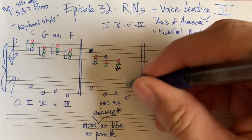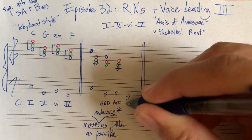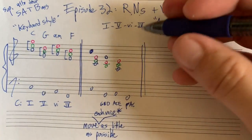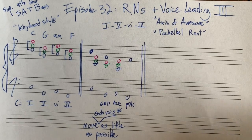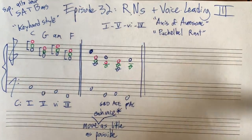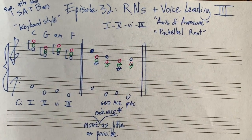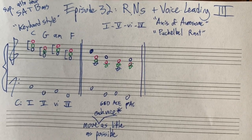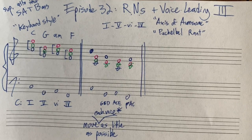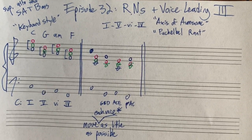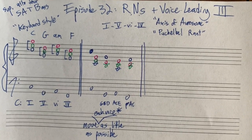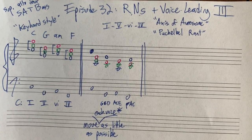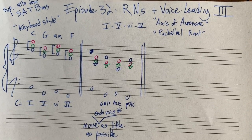Then we'll do the same thing with our F chord. An F chord has F, A, and C. The A and the C are already there — those are common tones. The E just goes one step up to F. So A is the third of the chord, C is the fifth of the chord. Let's compare and contrast: here's the first, chunkier version, and here's our much smoother version.